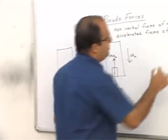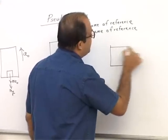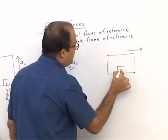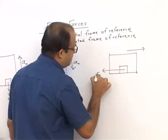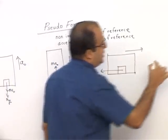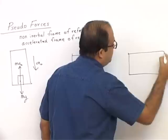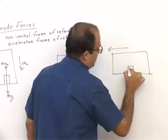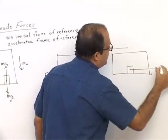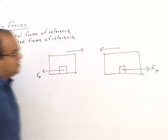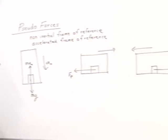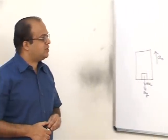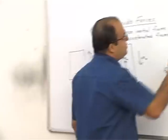Same way, if a car is accelerating forward, the pseudo force in this frame of reference will be in the backward direction. If the car is accelerating backward, the pseudo force in this frame of reference will be in the forward direction. So pseudo force always acts in a direction opposite to the acceleration of the reference frame.